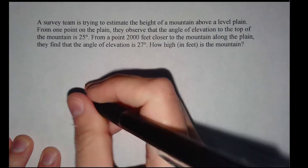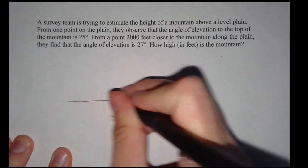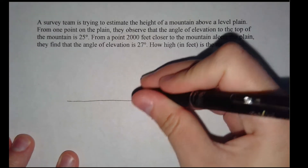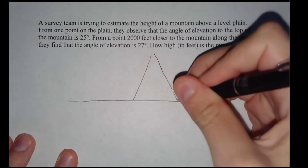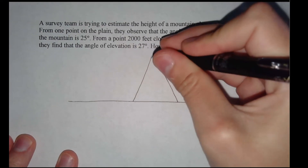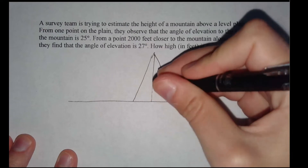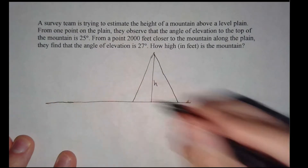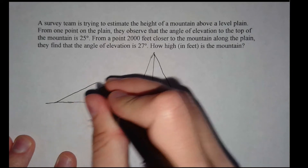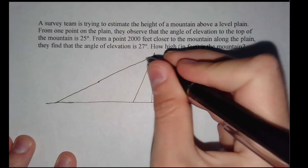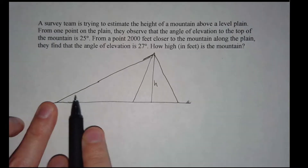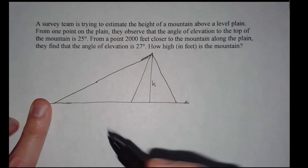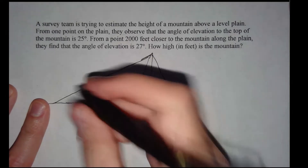I'm going to draw a picture to illustrate the situation. Here's our level plane, and this is our mountain over here. What we want to know is the height of the mountain. The surveyors view it from a certain distance, and they find the angle of elevation — the angle from the horizontal line of sight up towards the top of the mountain — is 25 degrees.